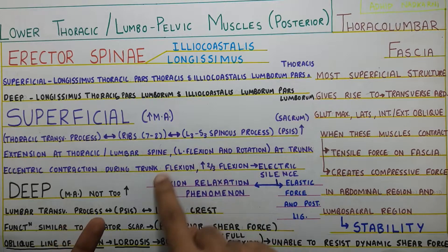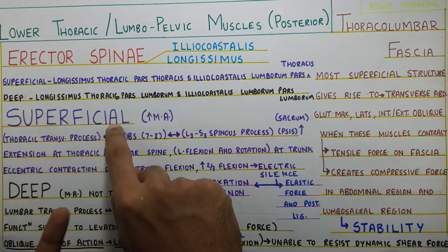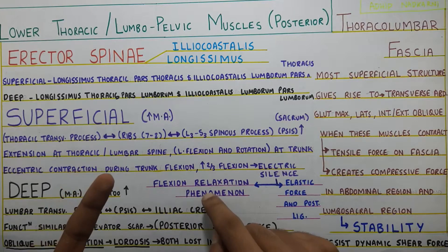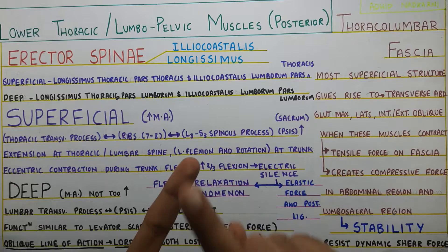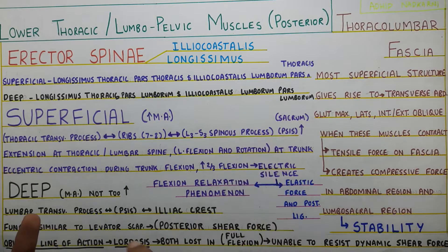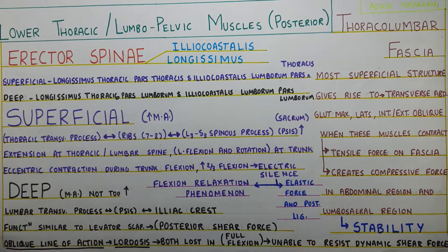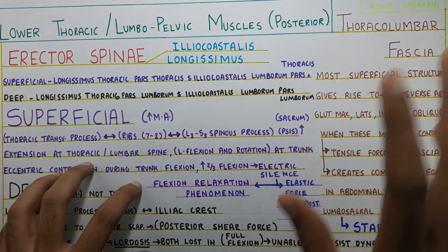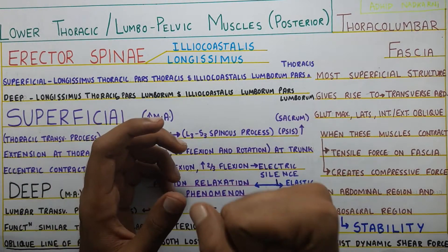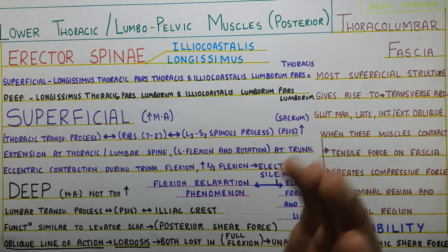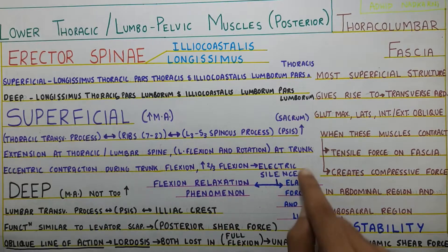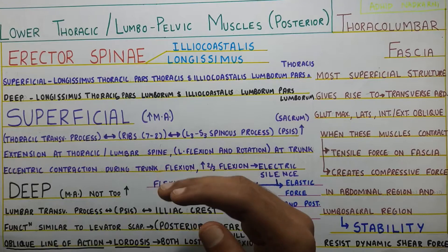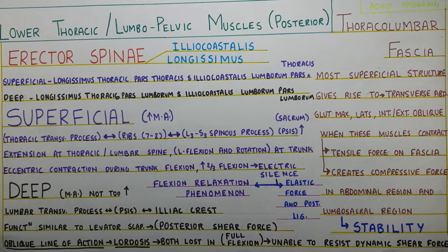To summarize: during flexion, two things happen — first, the flexion relaxation phenomenon causes the superficial muscles to go electrically silent, working only with their elastic force. Second, the oblique line of pull and lordosis are lost. Because of both these factors, your deep and superficial erector spinae are unable to resist the anterior shear forces on the lumbar spine. So to summarize this section: thoracolumbar fascia creates compression and stability in the trunk. The superficial erector spinae causes extension, lateral flexion, and rotation, and goes electrically silent in full flexion. The deep erector spinae creates a posterior shear force — and should be strengthened, not stretched, when there is excessive anterior shear force on the spine.